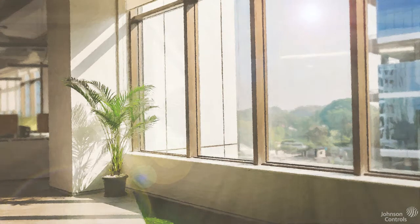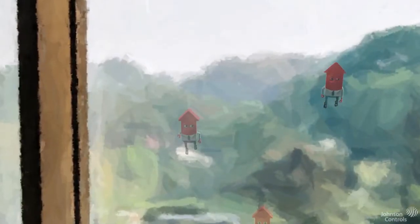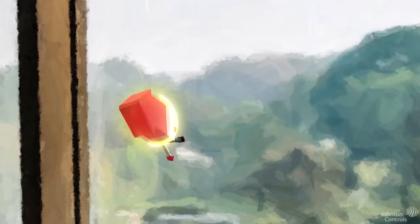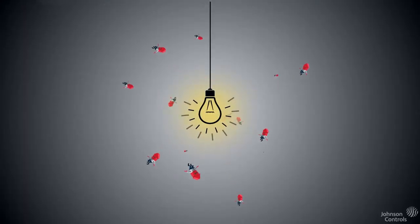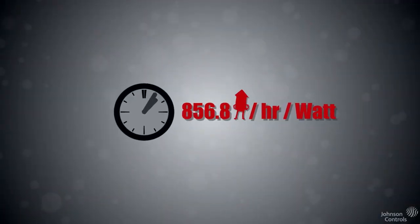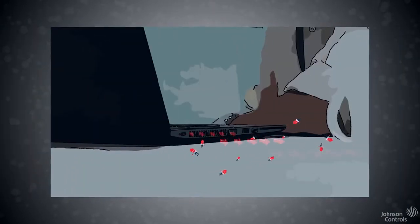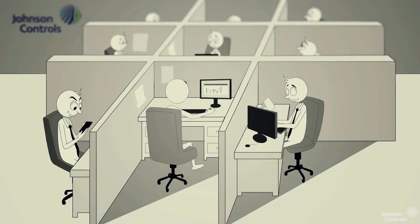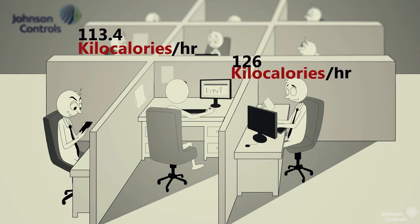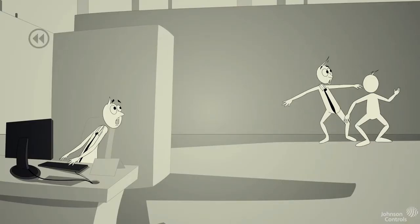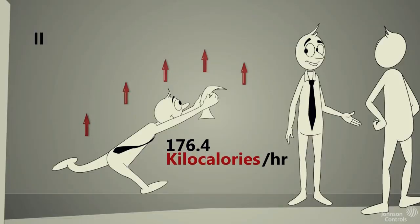With our simulated ability to see heat, we can identify some sources of heat energy. Heat from outside on a hot summer day will infiltrate into our space. The sun's energy beaming through windows adds calories. Any electrical consumption generates calories at a rate of 856.8 calories per hour per watt. Notice the heat coming off the lighting fixtures and the computers in the room. In a sedentary configuration, most people will generate 113.4 to 126 kilocalories per hour. If they are very active, they could be generating as much as 176.4 kilocalories per hour.